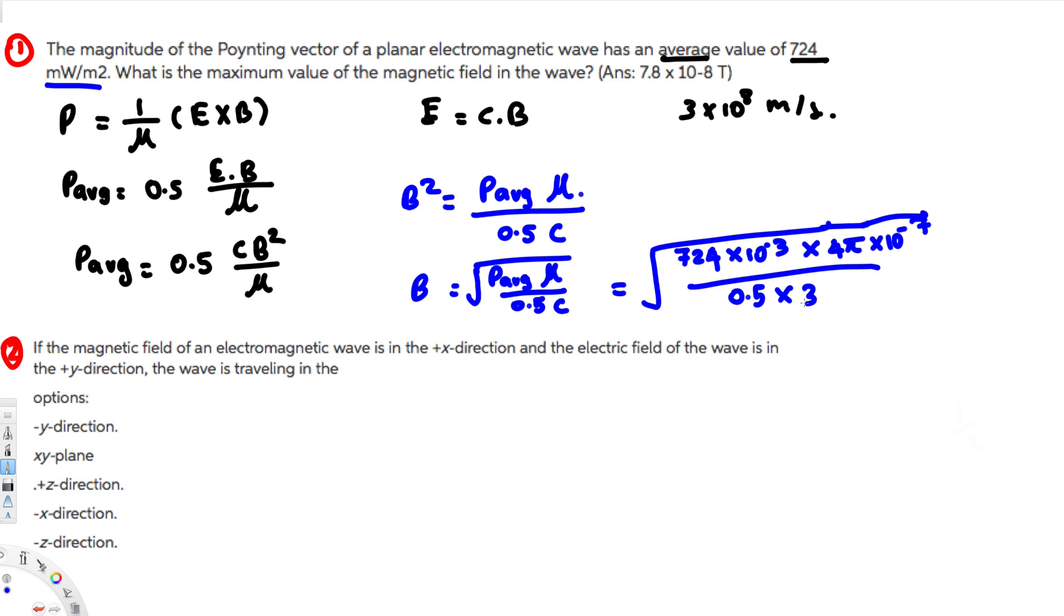Now let's plug 0.5, and C is going to be 3 times 10 to the power of 8, right? And if you plug all the values in the calculator, you should get 7.79 times 10 to the power of minus 8 Tesla. So that's going to be the answer.